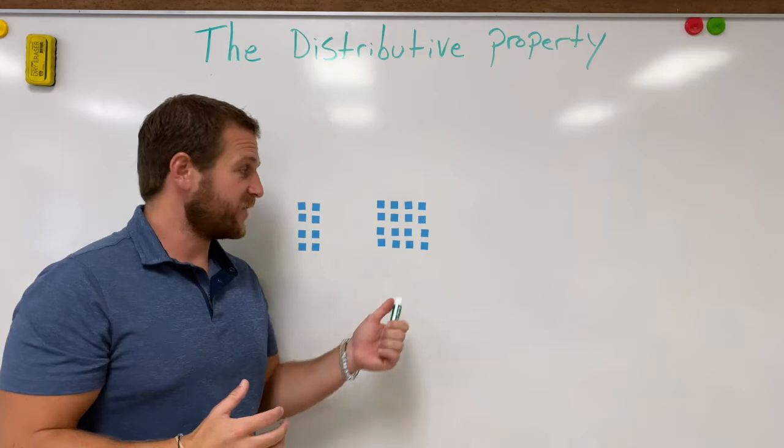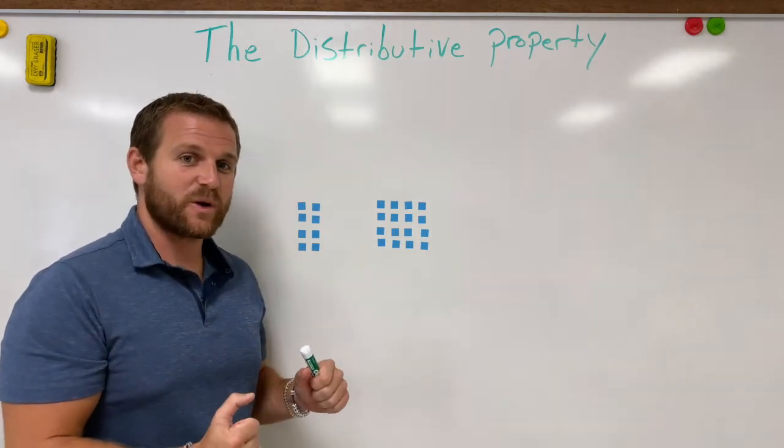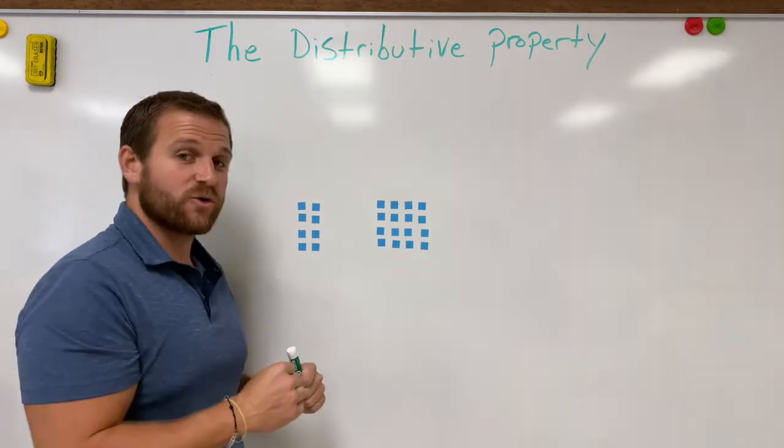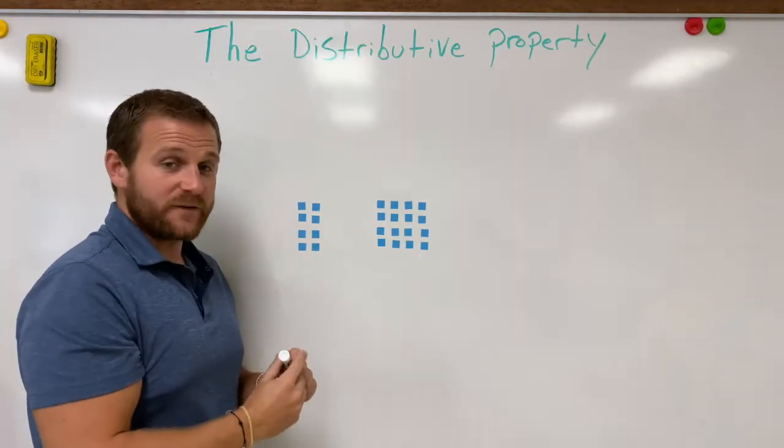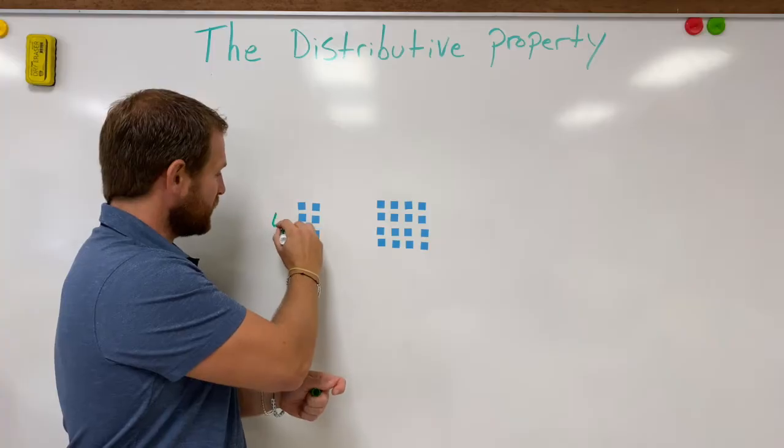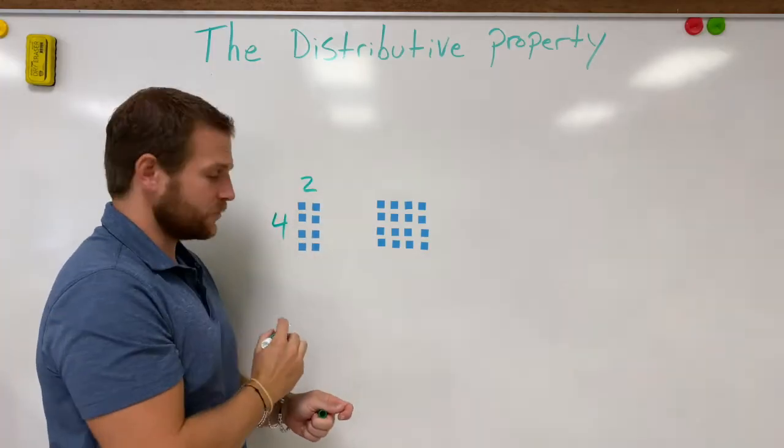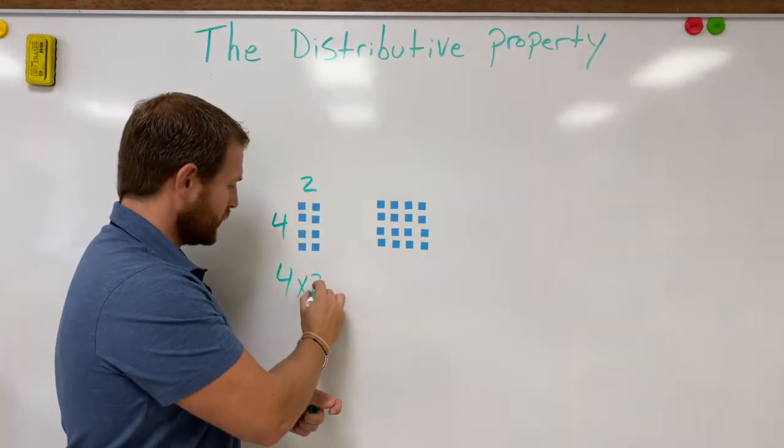Now what we've done is we've taken our four times six and we've broken it up into a different problem. We now have one group of four rows of two each. So that's four times two.